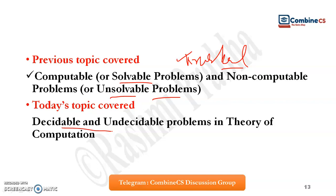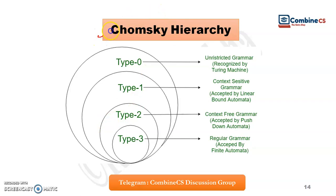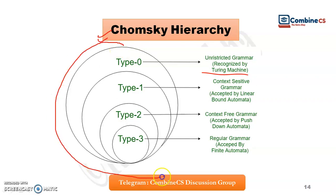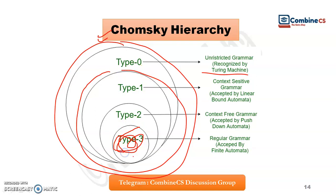I will provide a quick revision of the Chomsky hierarchy. In theory of computation, Type 3 means regular grammar, which is accepted by finite automata. Similarly, Type 2 means context-free grammar and it is accepted by pushdown automata. The next level is context-sensitive grammar, accepted by linear bounded automata. And at the top is unrestricted grammar, accepted by Turing machine.